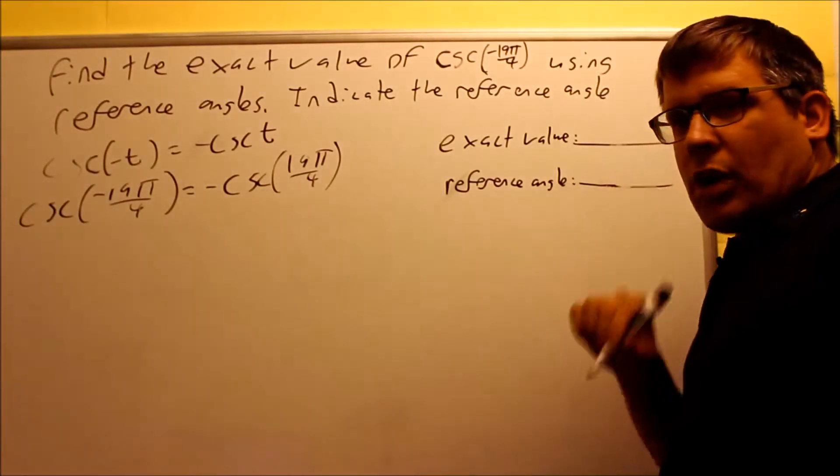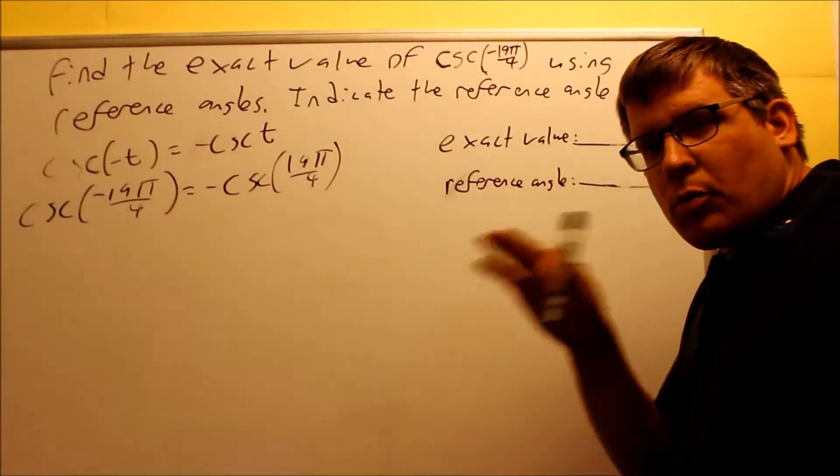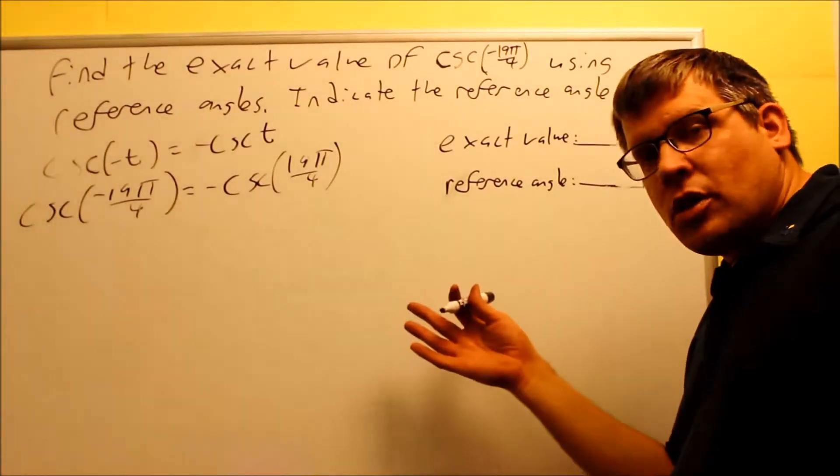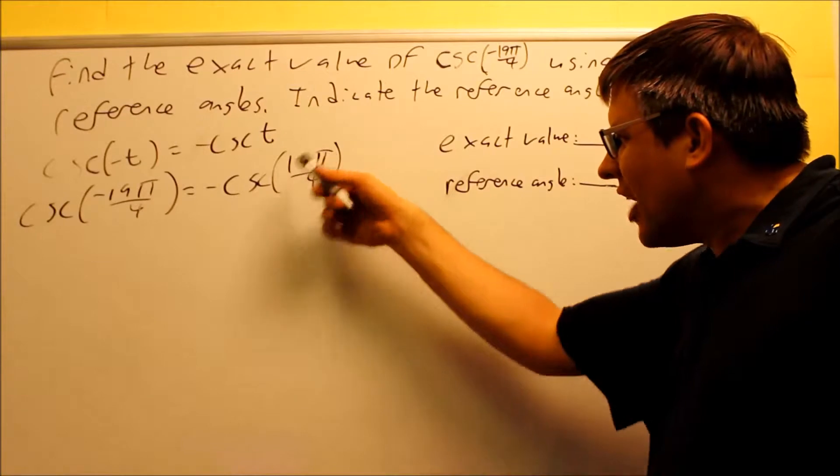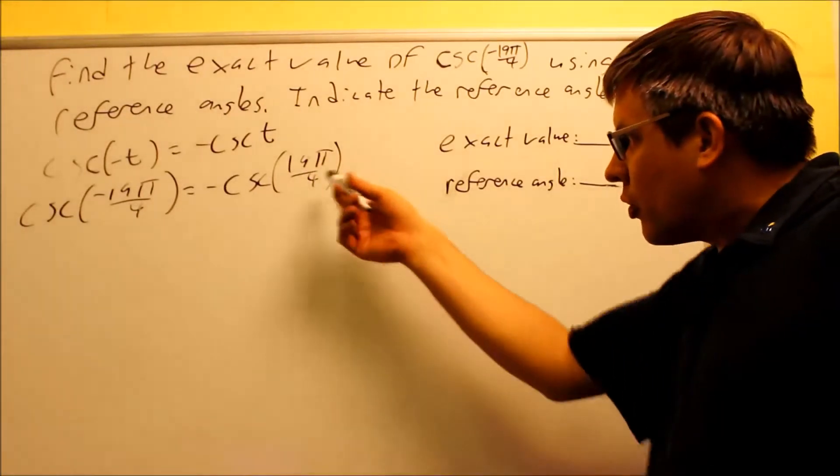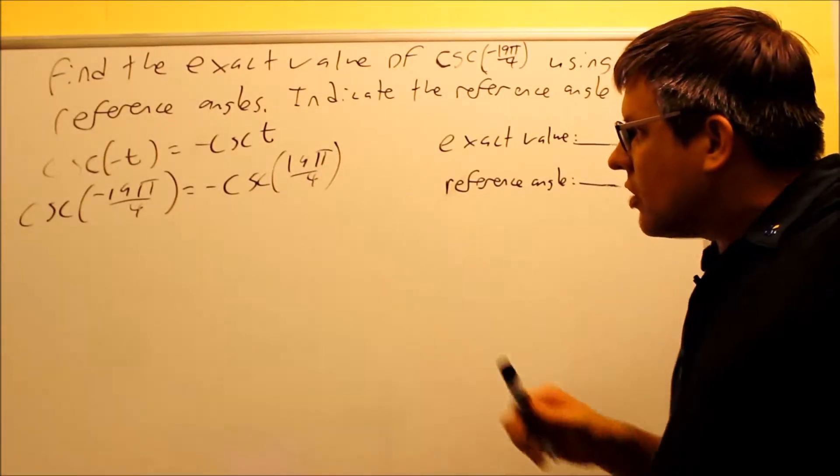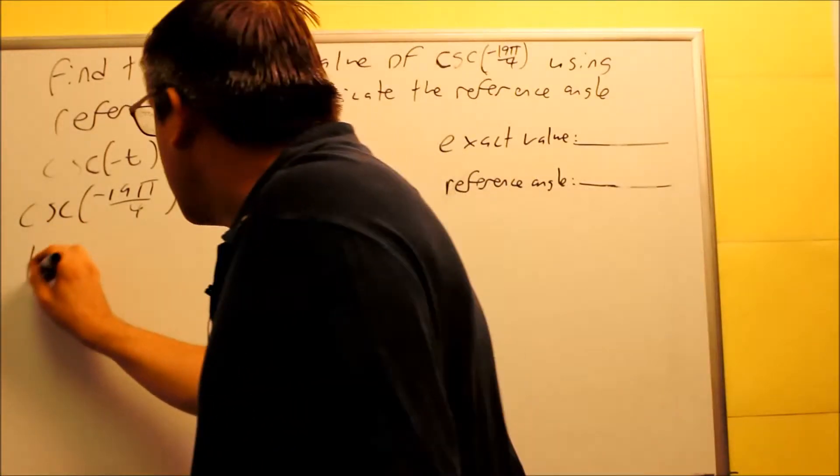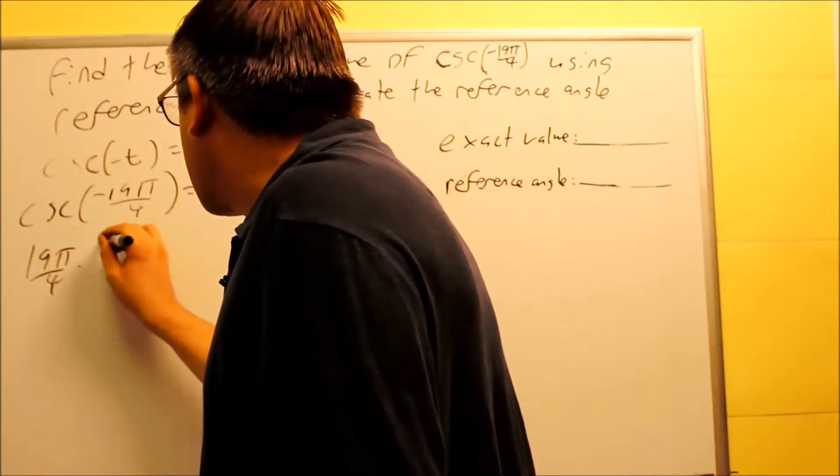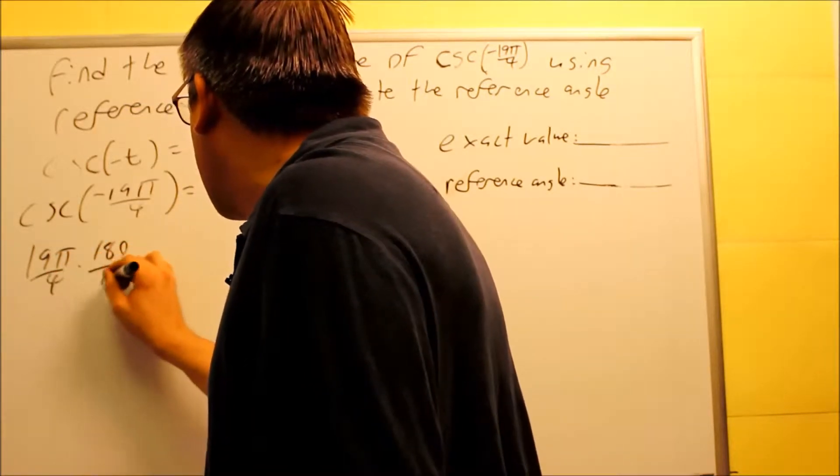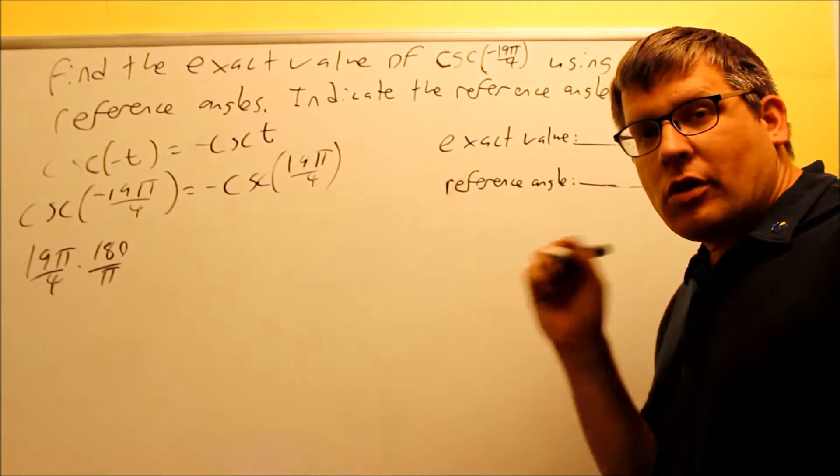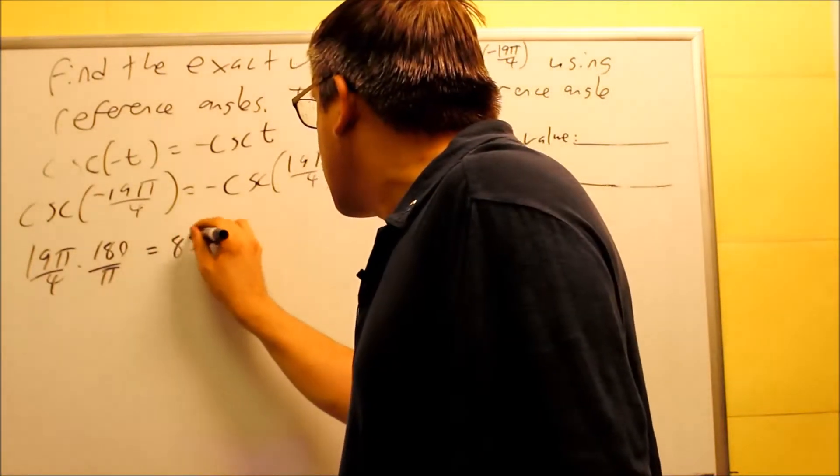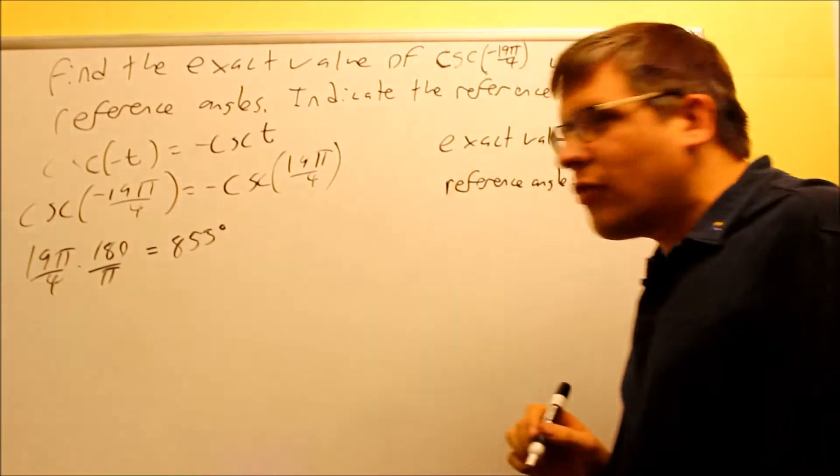Now, you could do the problem all in radians like I've done for a couple of previous examples, but I want to show one example here where I actually work in degrees instead. So this might be an alternative. If you don't want to take this, then divide by 2π and work with fractions. Instead, you could change this into degrees. So 19π over 4, I want to multiply by 180 over π. If you do all that, you should get 855 degrees.